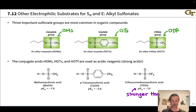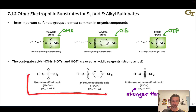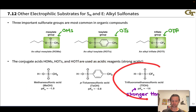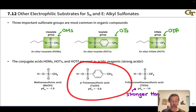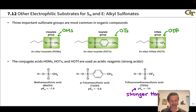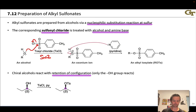We've actually seen in another video that these very stable anions have conjugate acids that can be used as acidic reagents that are even in strong acid territory with negative pKa values — things like triflic acid (trifluoromethane sulfonic acid), paratoluene sulfonic acid, and methane sulfonic acid are actually used as acidic reagents in organic reactions.